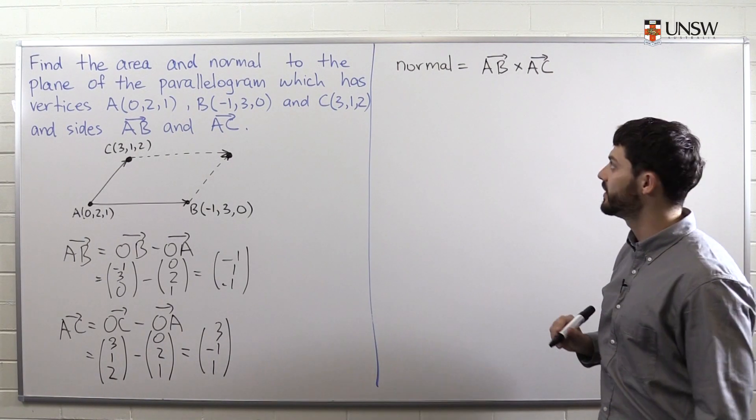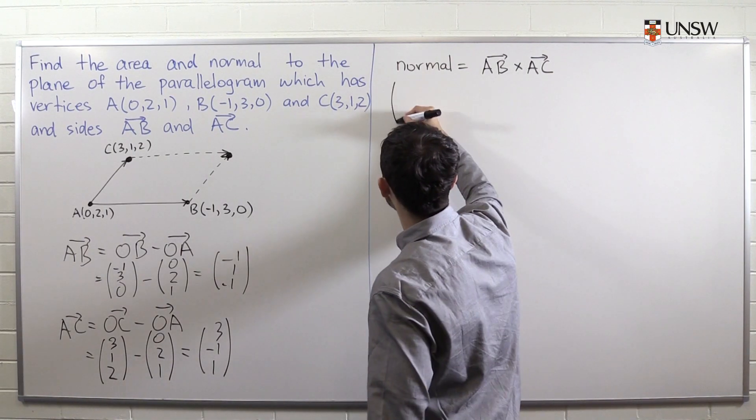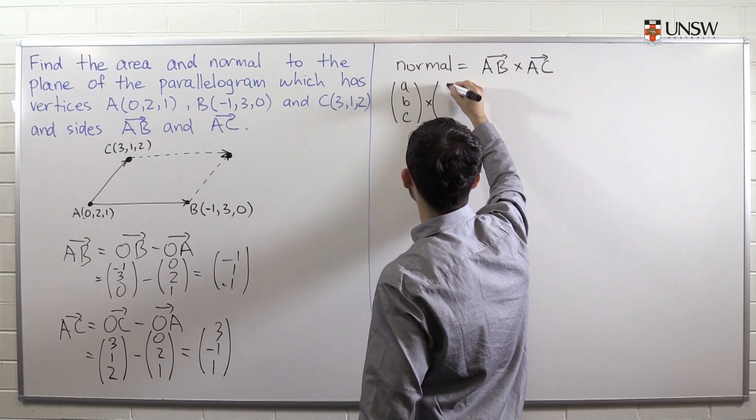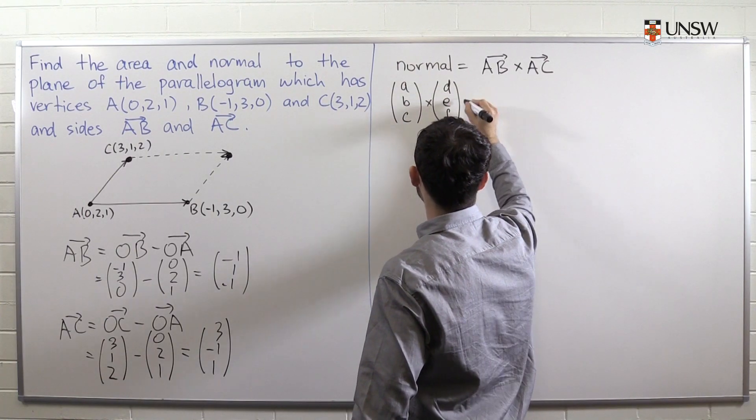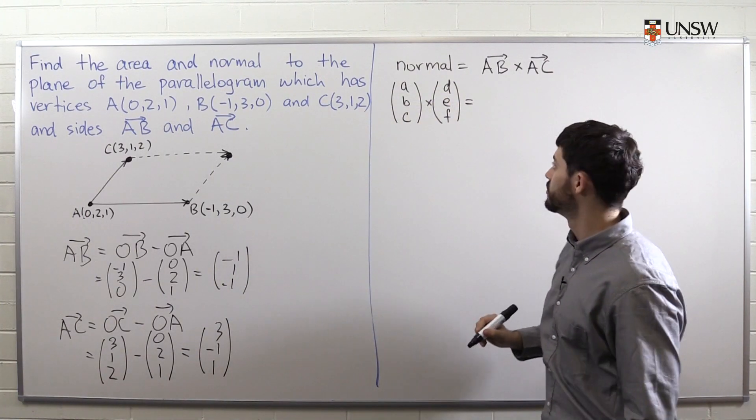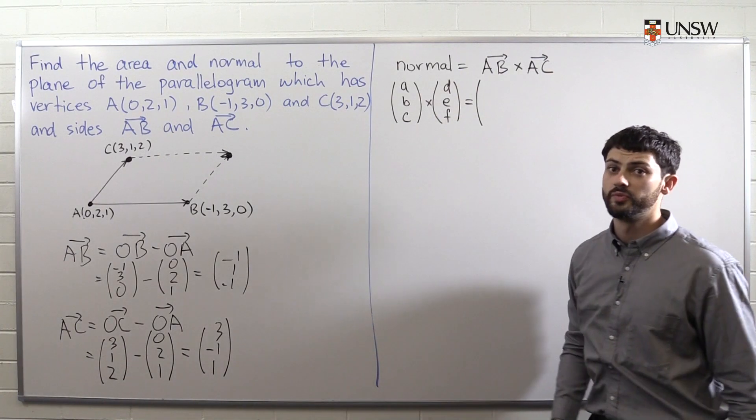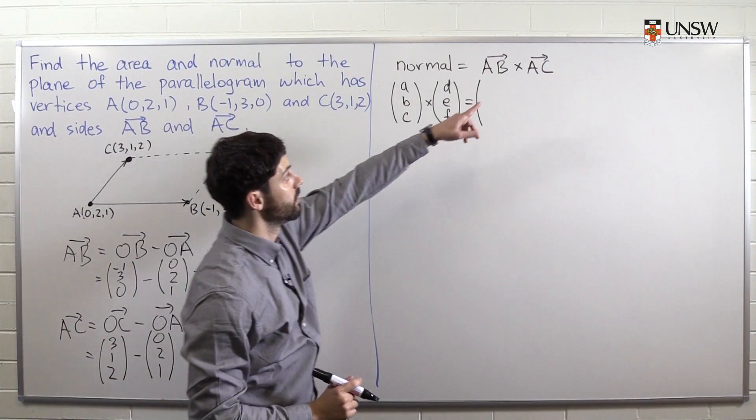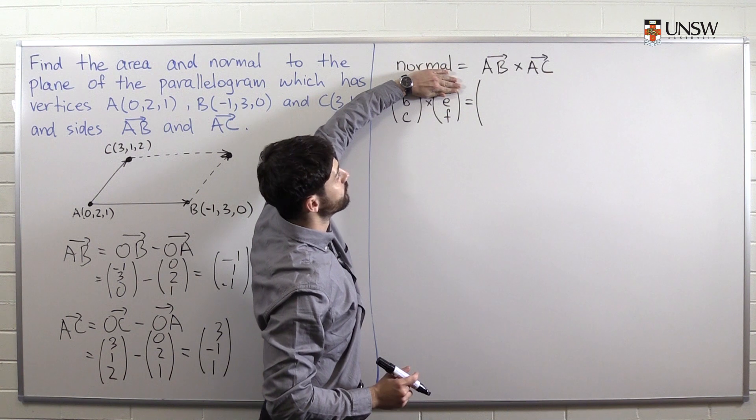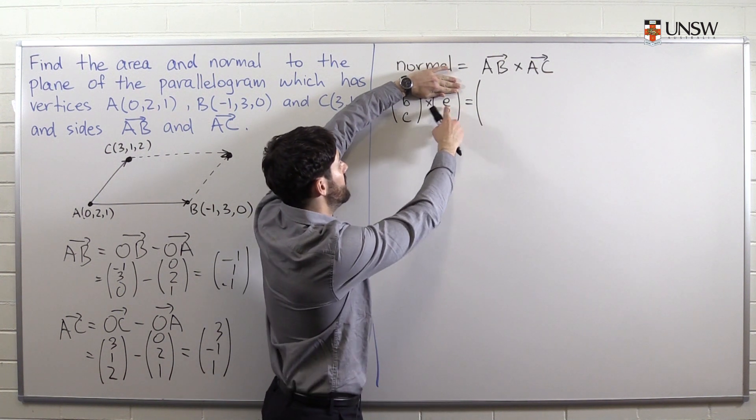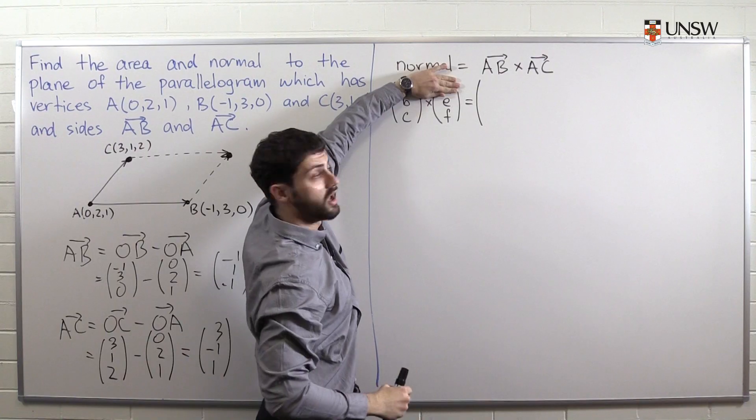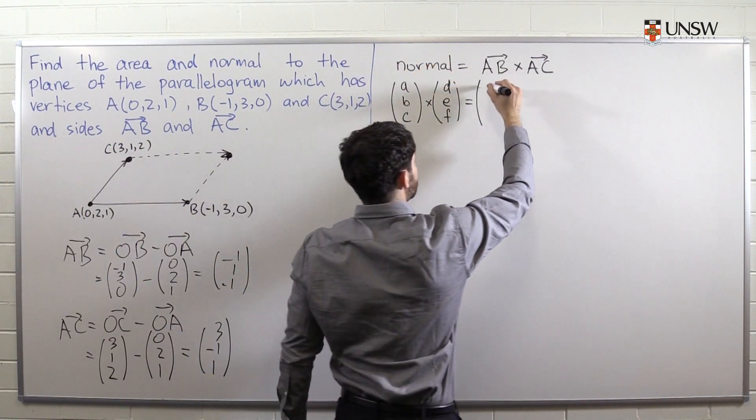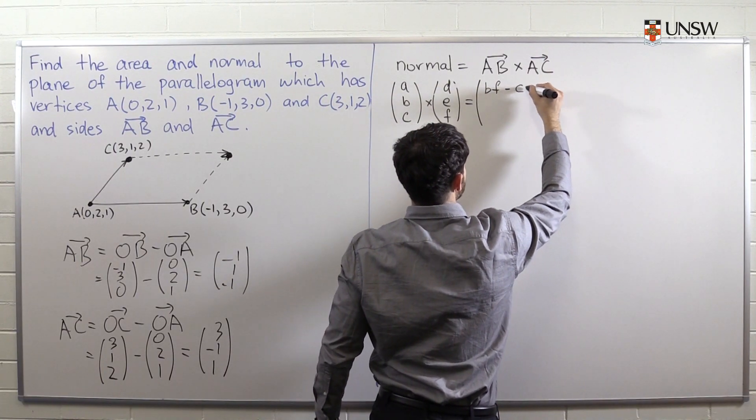So I'll remind you how to find the cross product in general. If you have two vectors (a, b, c) and (d, e, f), and you want to find their cross product, there is a relatively simple procedure that we use. Remember, first of all, the answer is going to be another vector. So the first coordinate of this result, what we do is we ignore the first row and we are left with b, e, c, f. And so what we do is we do bf minus ce.